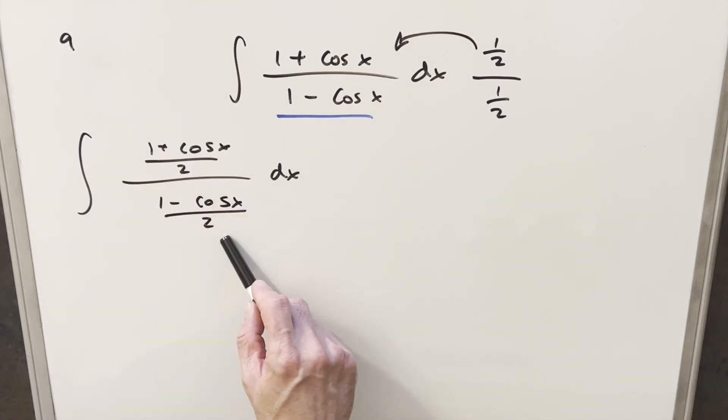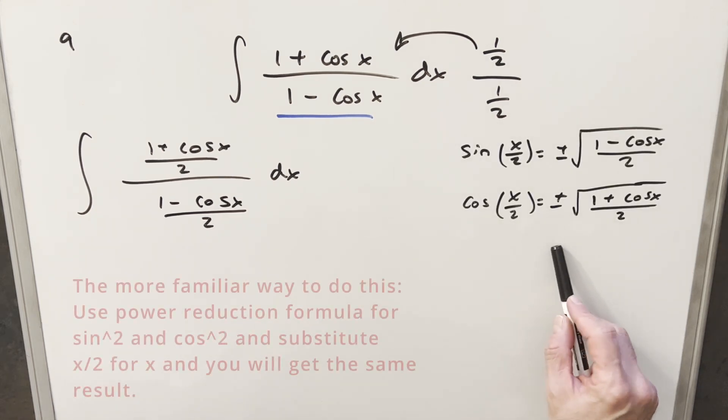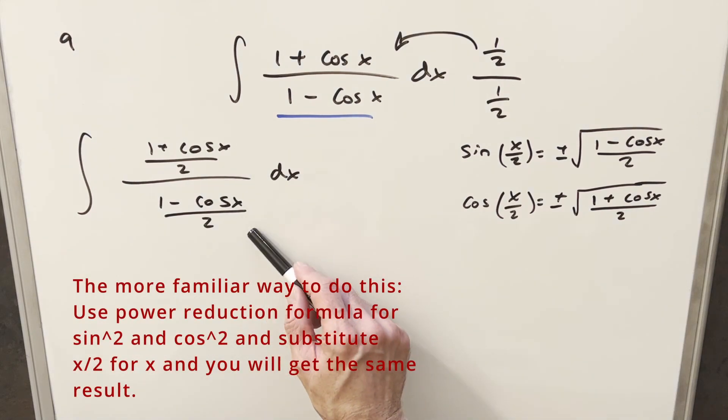And just having the integral in this form, what I want to notice is the similarity here to the half angle formula for sine and cosine. So we have our formulas over here to the right. And of course, you'll notice the similarity here with what we have in our integral.